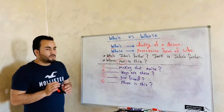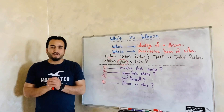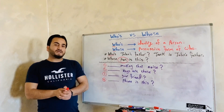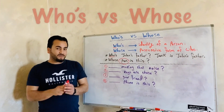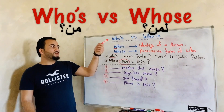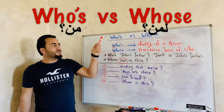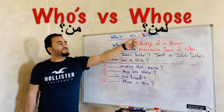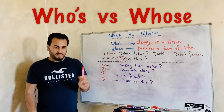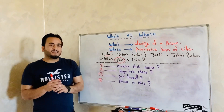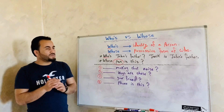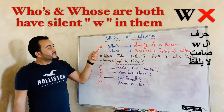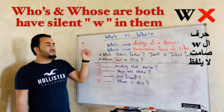Hello everyone, welcome back to Learning English with Mr. Habez. Today I'm going to be talking about the difference between who's and whose — who apostrophe S, and whose with S-E at the end. Before we start, I just want to remind you that these two words have a silent W in them.